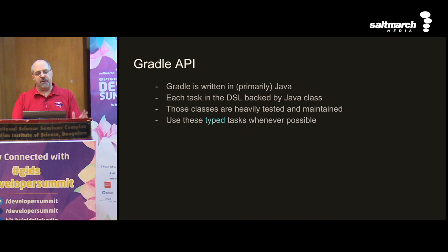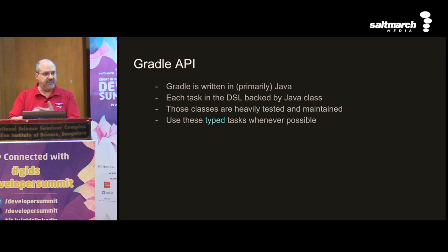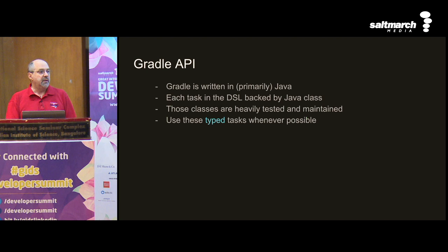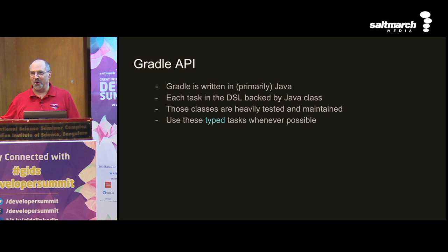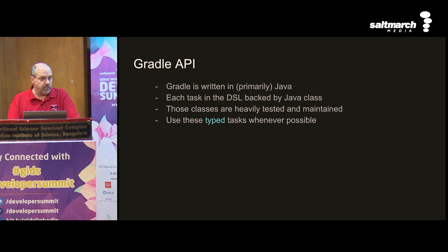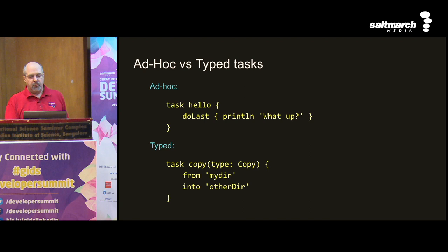There are three sets of Gradle documentation. The first is the user manual — the semantics of how to do things. The second is the DSL reference — the syntax, what methods take, what they return. The third is the Javadocs — you mostly only need these if you start writing your own plugins, where you're actually coding against the API: the Project class, the Task interface, and so on. Use typed tasks as much as possible because they are debugged, performant, and well-tested.